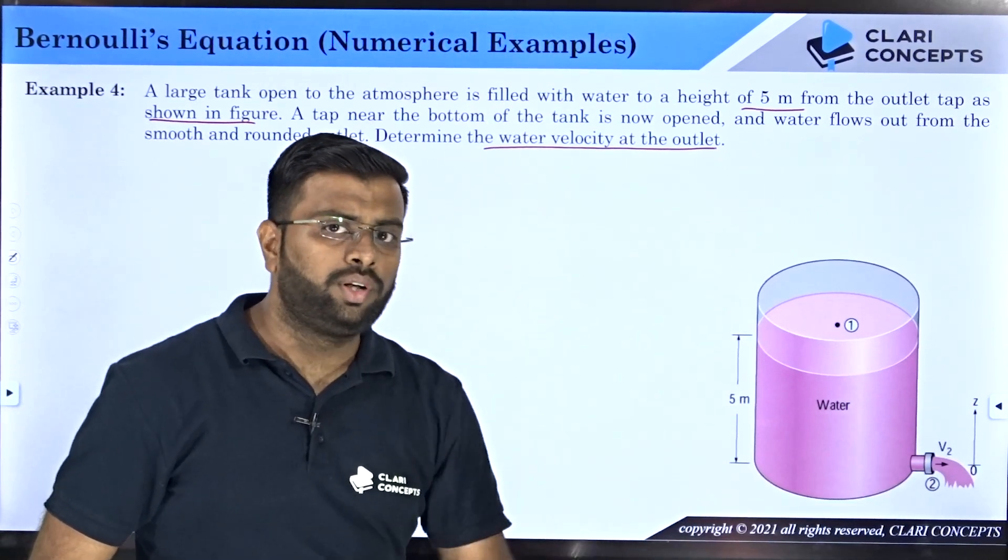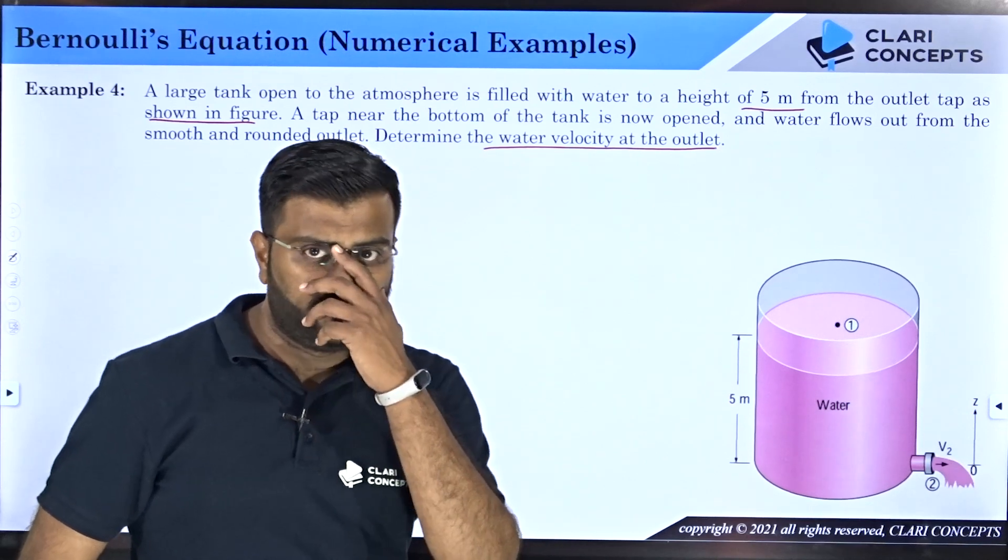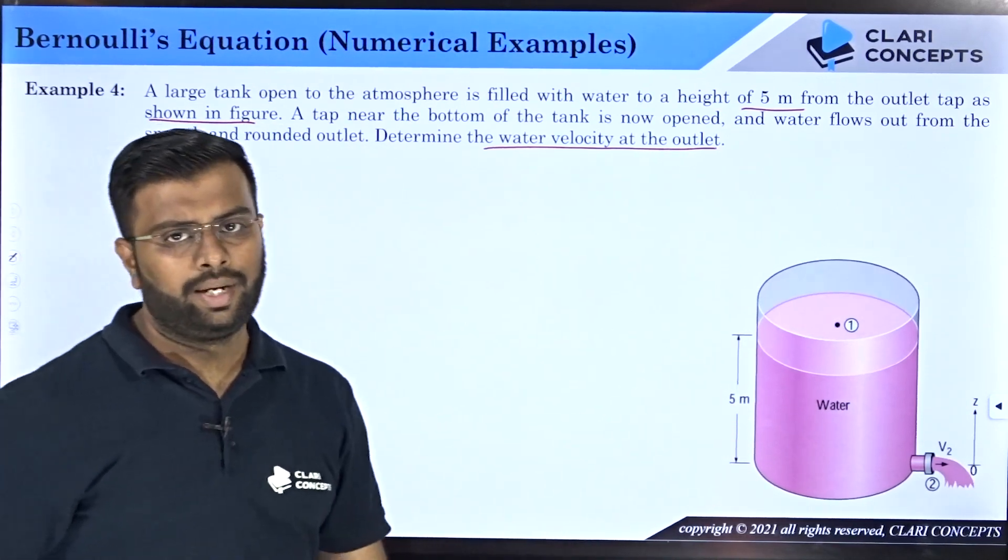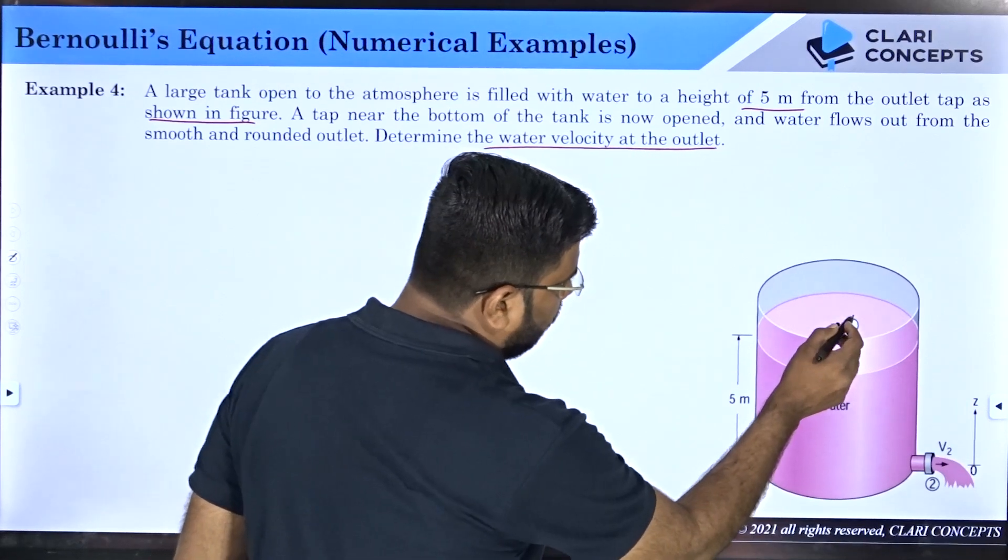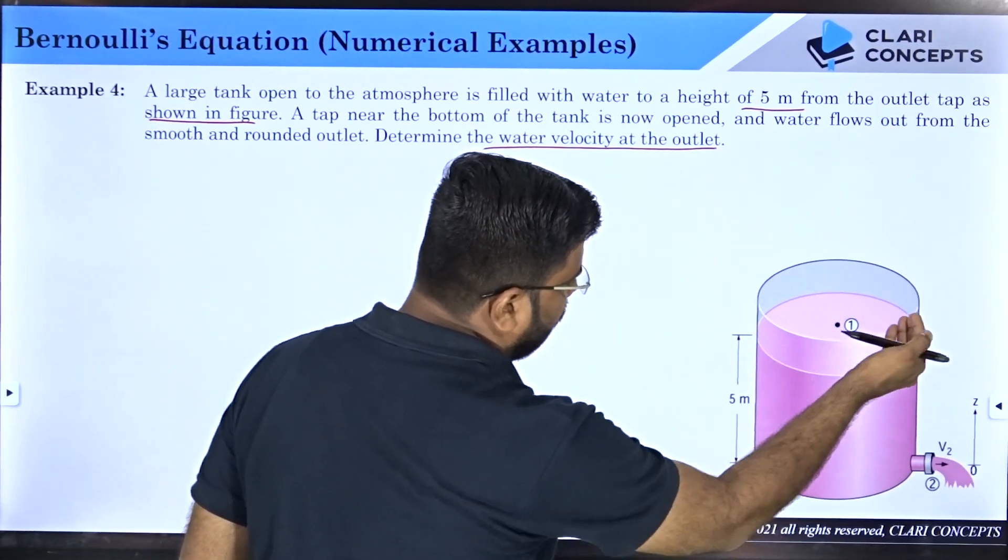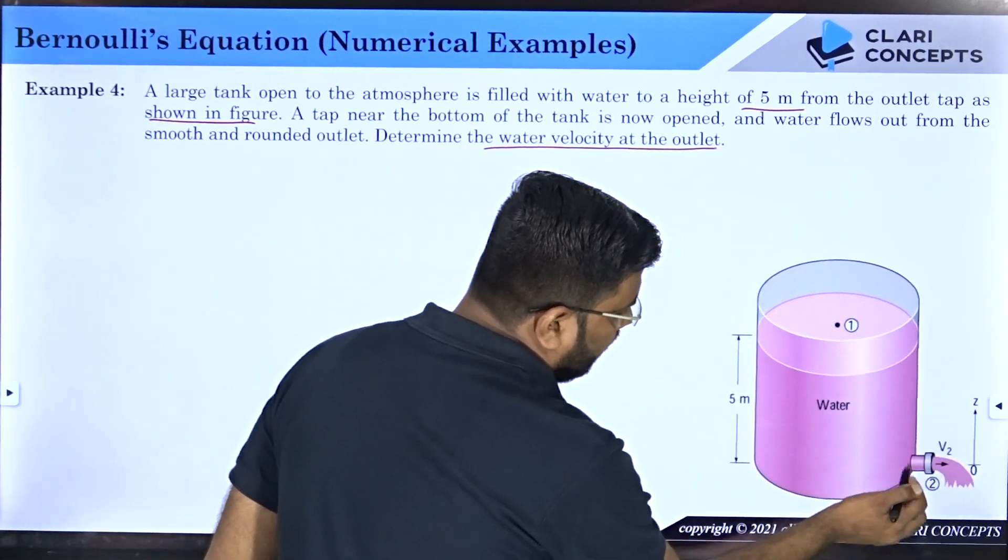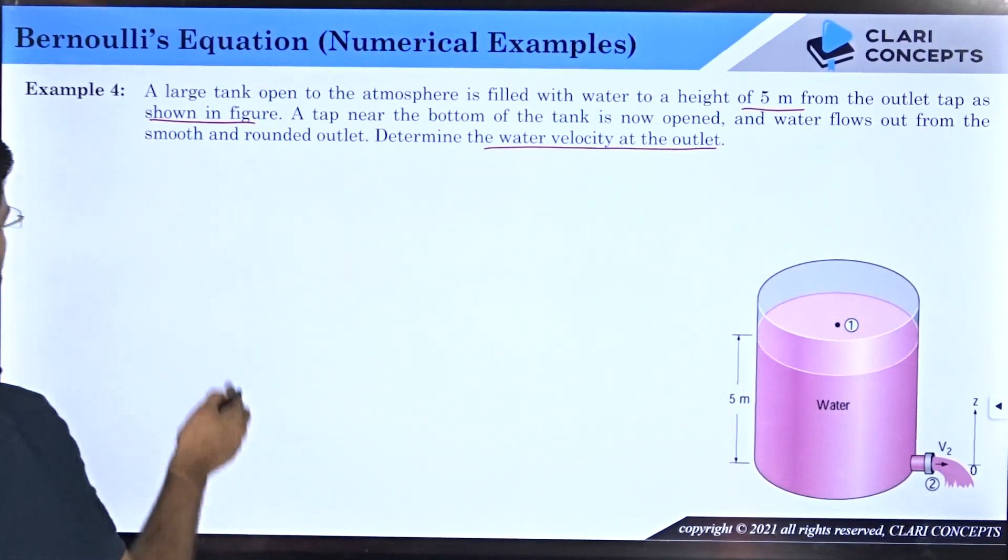Let us first choose point one which is on the free surface of the water, and point two which is a section at just the outlet of the tap. Now if I use Bernoulli's theorem at both these points: